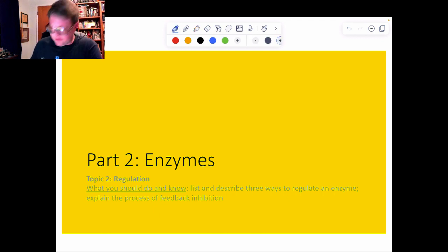We're going to look at how do we control these things. So you should be able to list and describe three ways to control an enzyme, and then tell me what we mean by feedback inhibition.